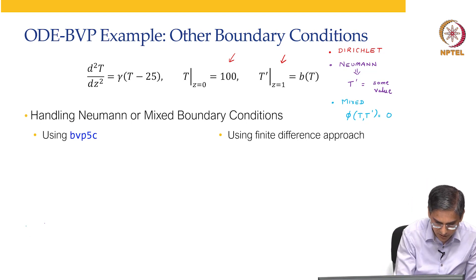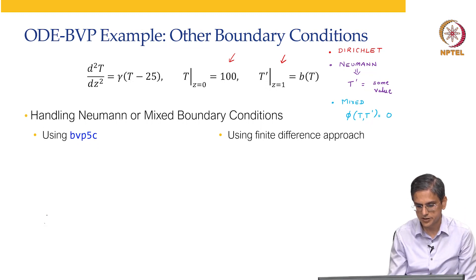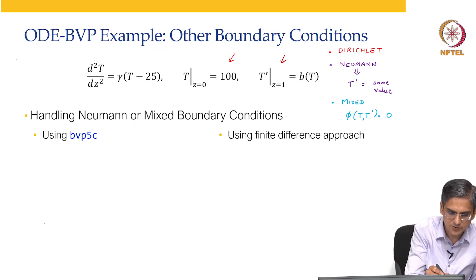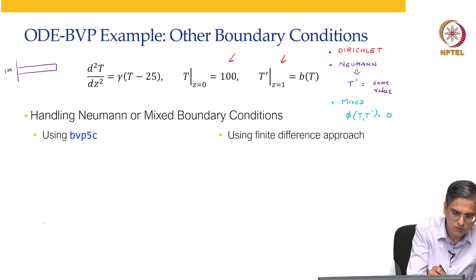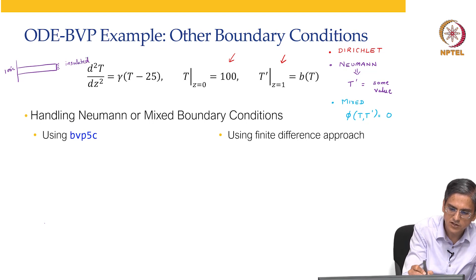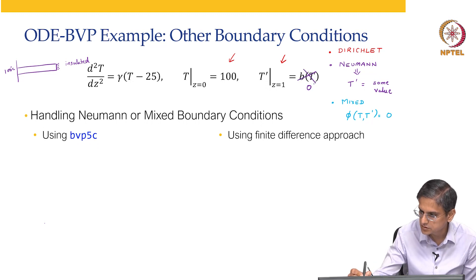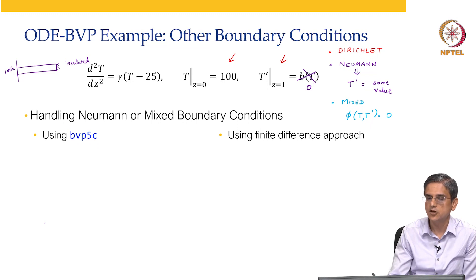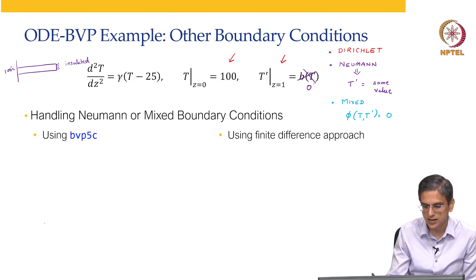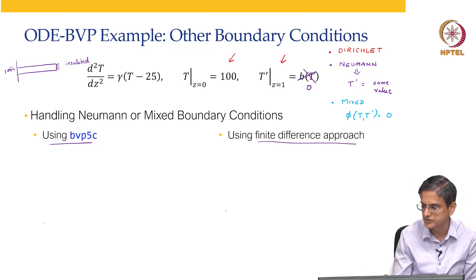Let us take an example of a Neumann boundary condition. We have a rod where one end is kept at 100 degrees Celsius, and instead of the other end being kept at 25 degrees Celsius, let us say that end was insulated. If the rod is insulated, then the boundary condition is T' = 0 — that is the Neumann boundary condition. So how do you handle T' = 0 using BVP5C and using the finite difference approach?